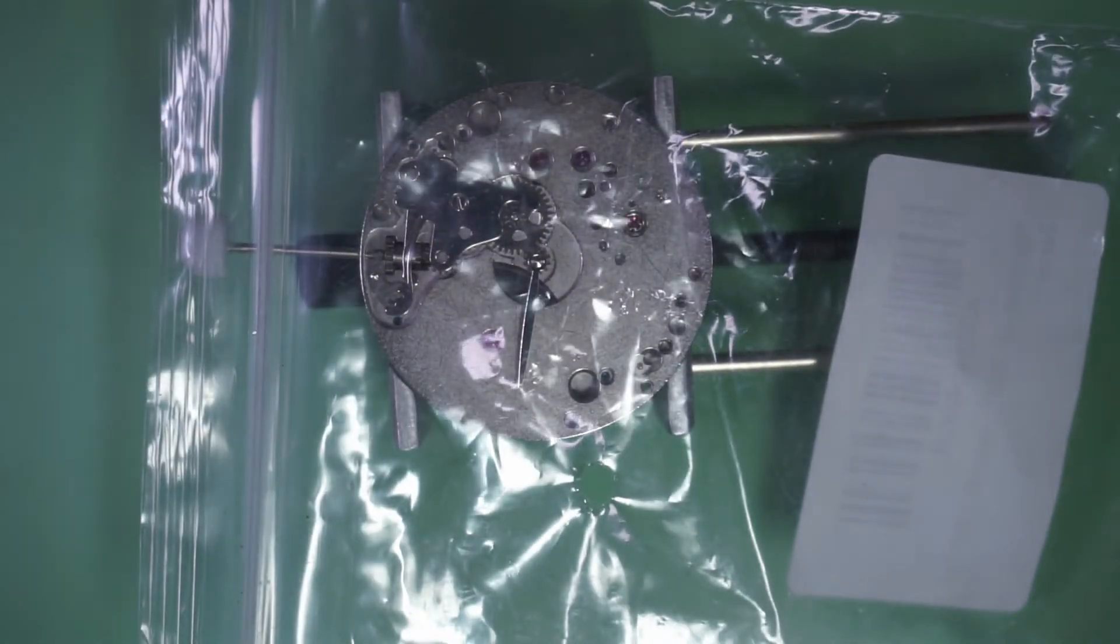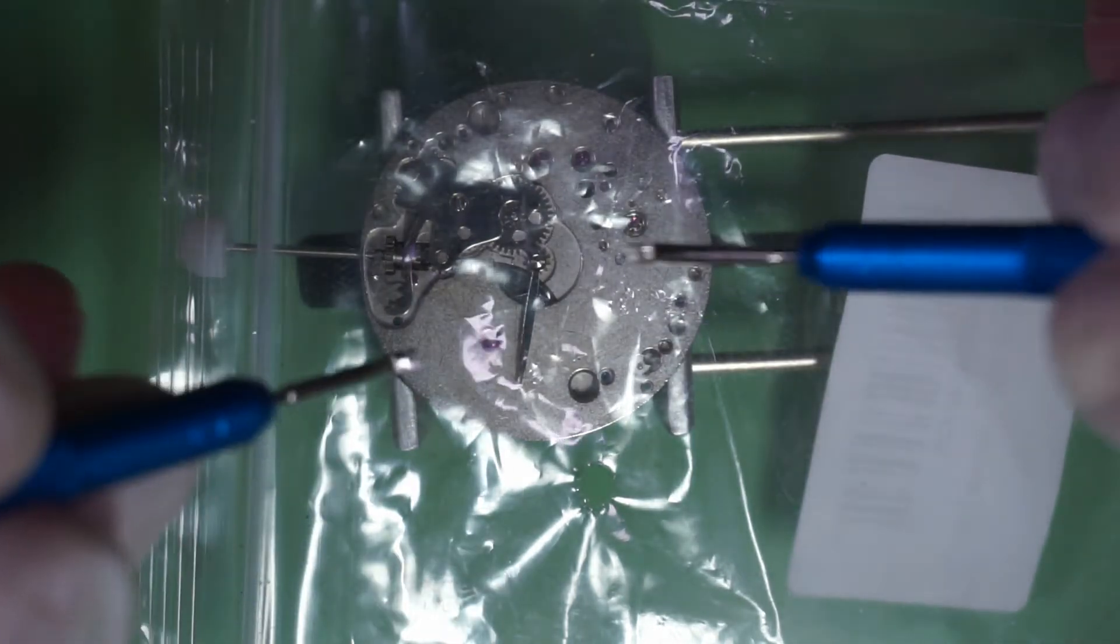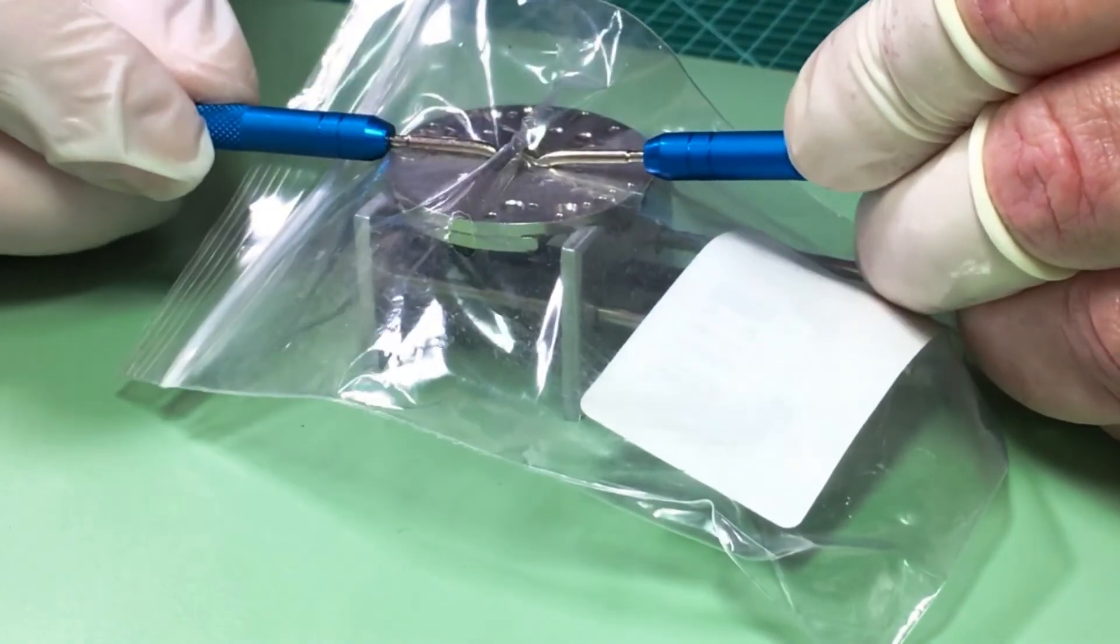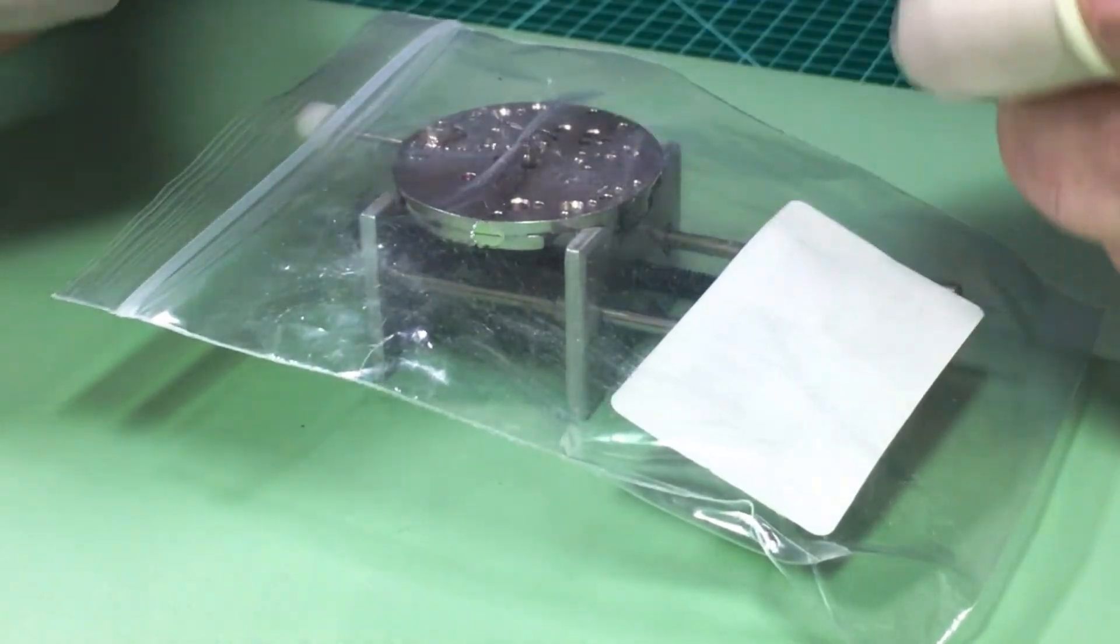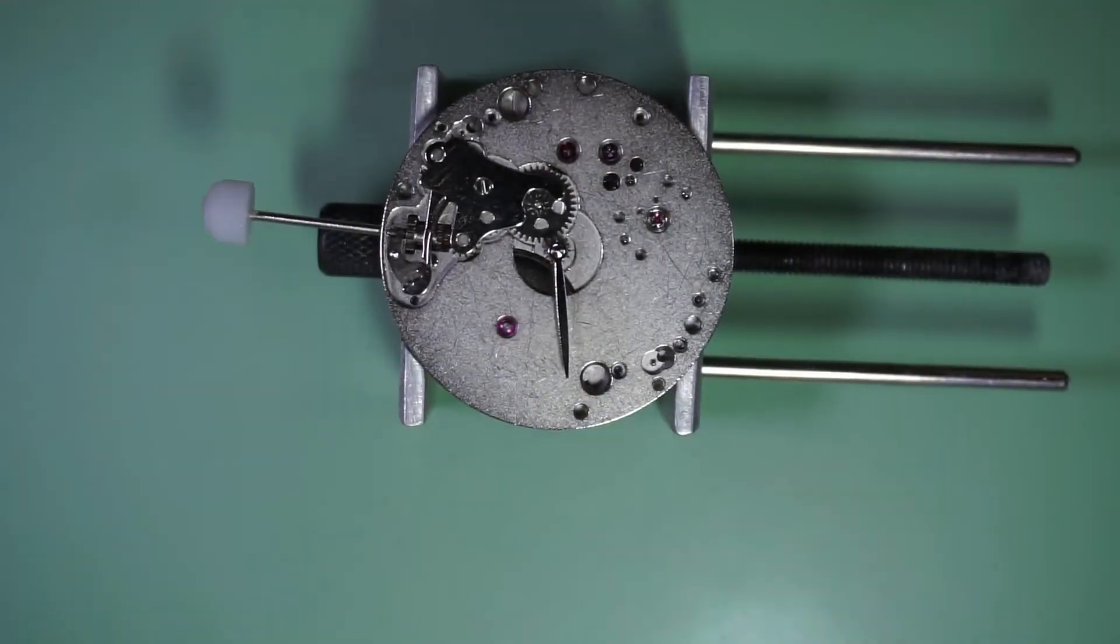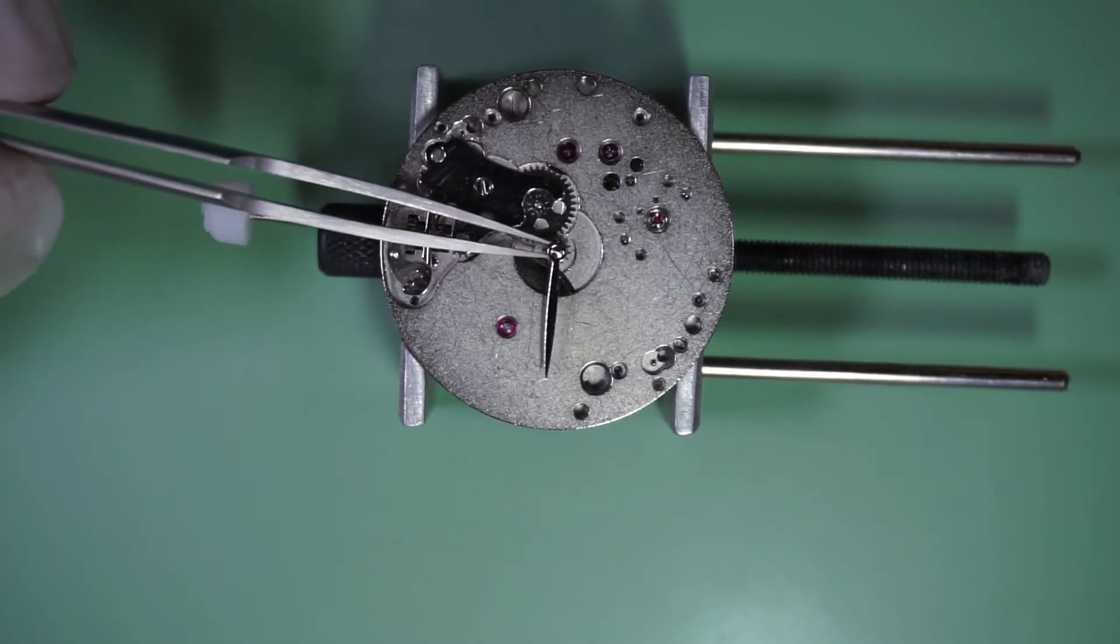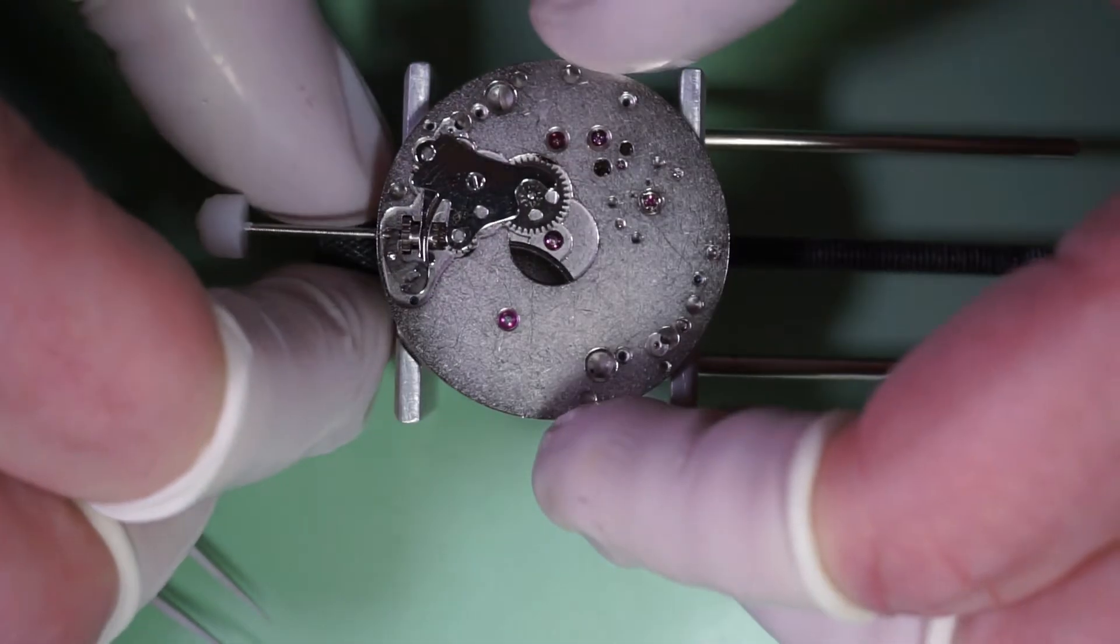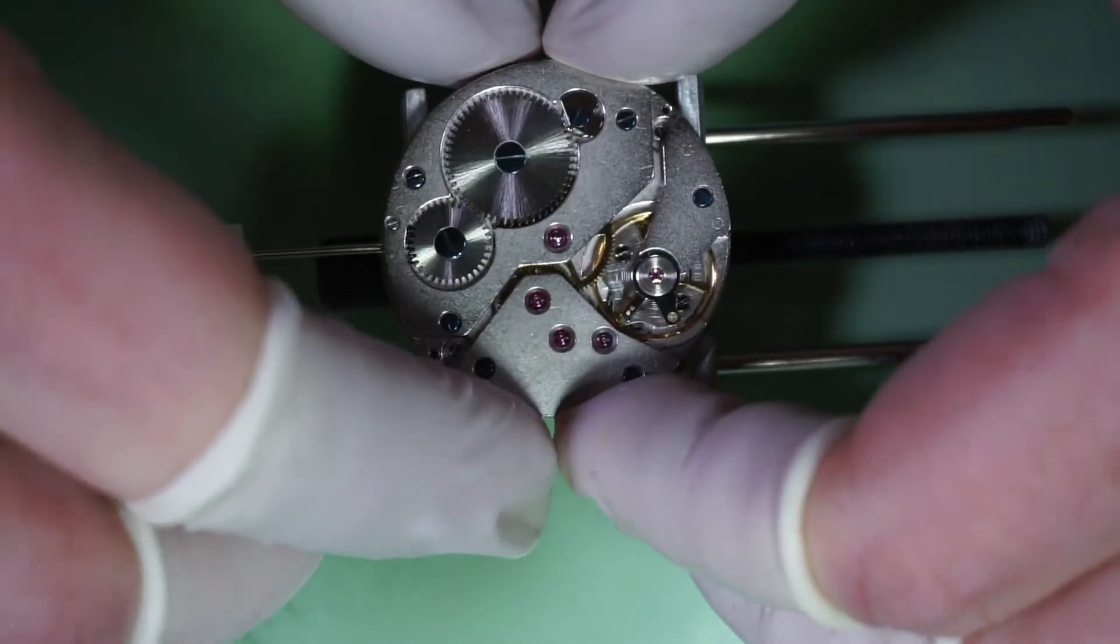So next I'll remove the minute hand and I'll be using some hand remover levers and I'll put a little piece of plastic over the movement. If there was a dial there, this would just protect the dial. And you'll notice that there's only a minute hand on this movement. It did not come with an hour hand. I just noticed that the cannon pinion came off with the hour hand, or excuse me, the minute hand. So with the cannon pinion already removed, I'll flip the movement back over.